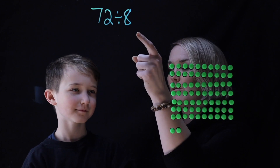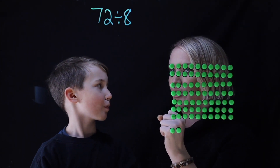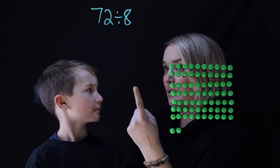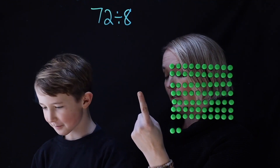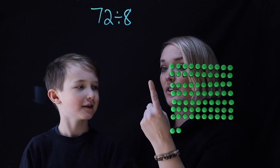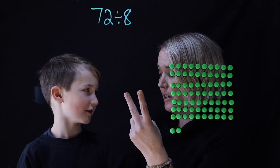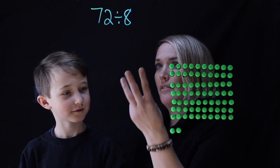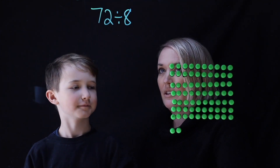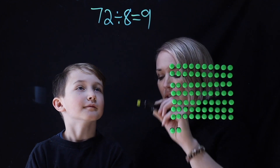So you're finding 8 equal groups, but you have this way of doing it where you just go like: 72 divided by 2 is? 72 divided by 2 would be 36. And then 36 divided by 2? 18. And then 18 divided by 2? 9. Okay, so this would be 9 then.